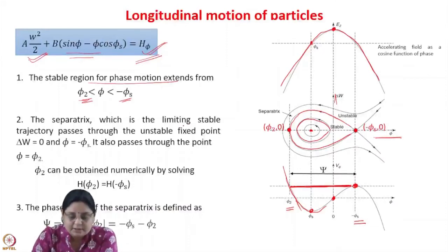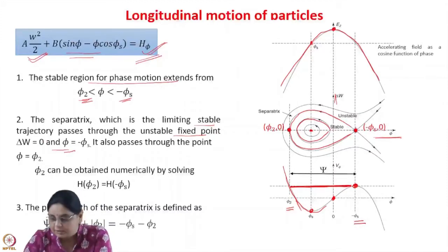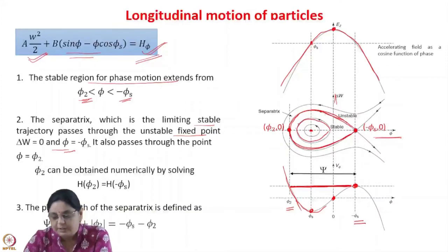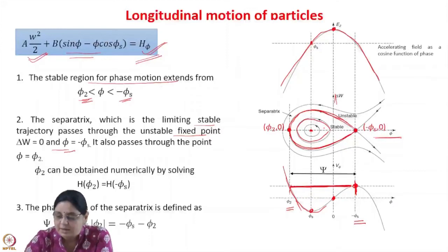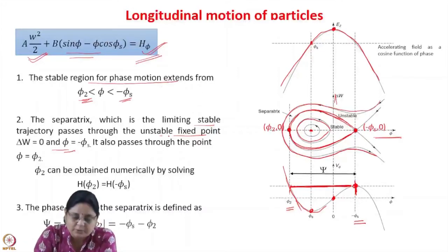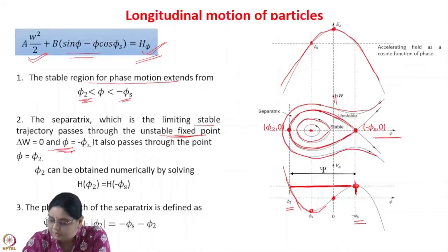The separatrix, which is a limiting stable trajectory, passes through the unstable fixed point delta_w equal to 0 and phi equal to minus phi_s. All trajectories within the separatrix are stable, and all trajectories outside the separatrix are unstable. In other words, all particles with phases within the separatrix — lying between phi equal to minus phi_s and phi_2 — execute stable oscillations about the synchronous particle. The point phi equal to minus phi_s is the unstable fixed point because the potential has a maxima there.